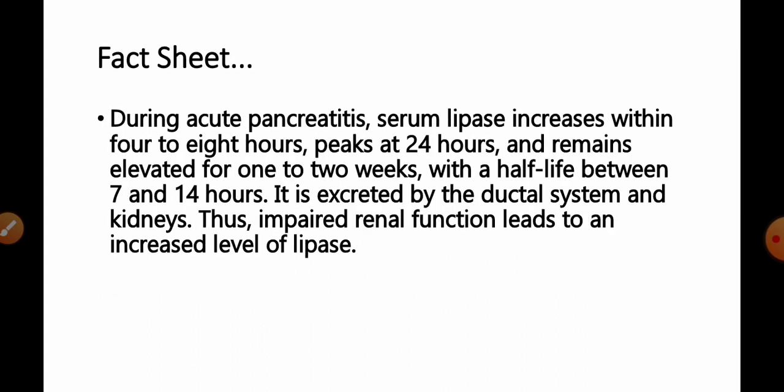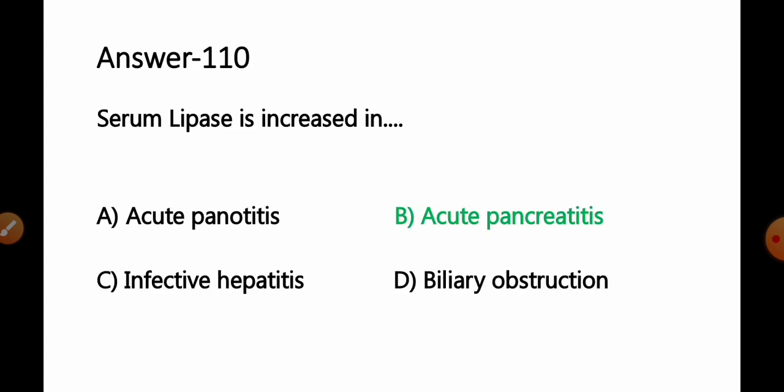Fact available for this question: During acute pancreatitis, serum lipase increases within 4 to 8 hours, peaks at 24 hours and remains elevated for 1 or 2 weeks with a half-life between 7 to 14 hours. It is excreted by the ductal system and kidneys. Thus, impaired renal function also leads to an increased level of lipase. So we can say it is acute pancreatitis, the condition where serum lipase is increased. So we can say option B. Acute pancreatitis will be the correct answer for this question.